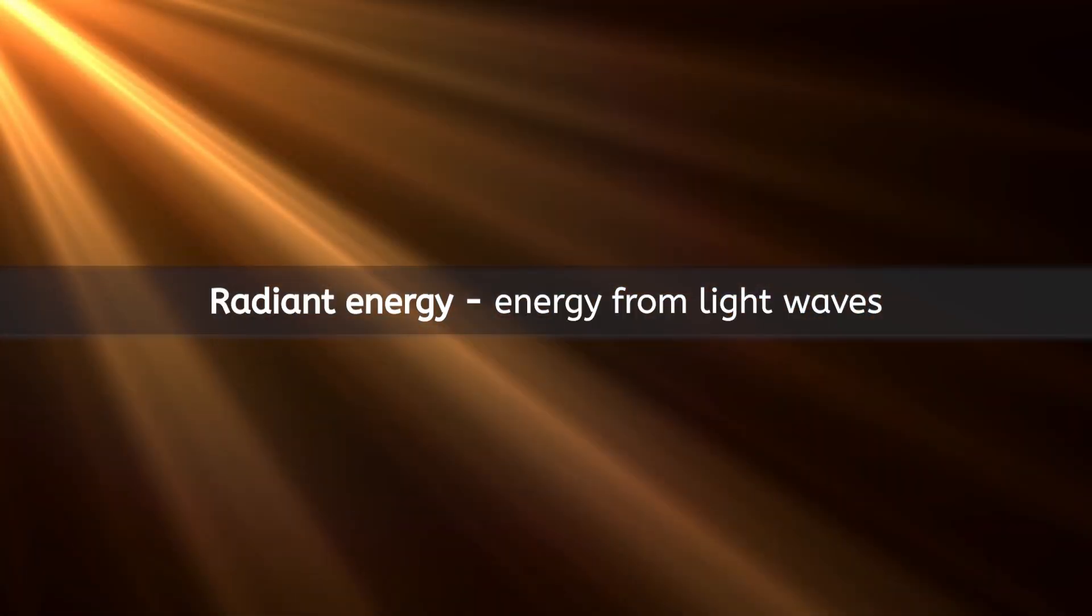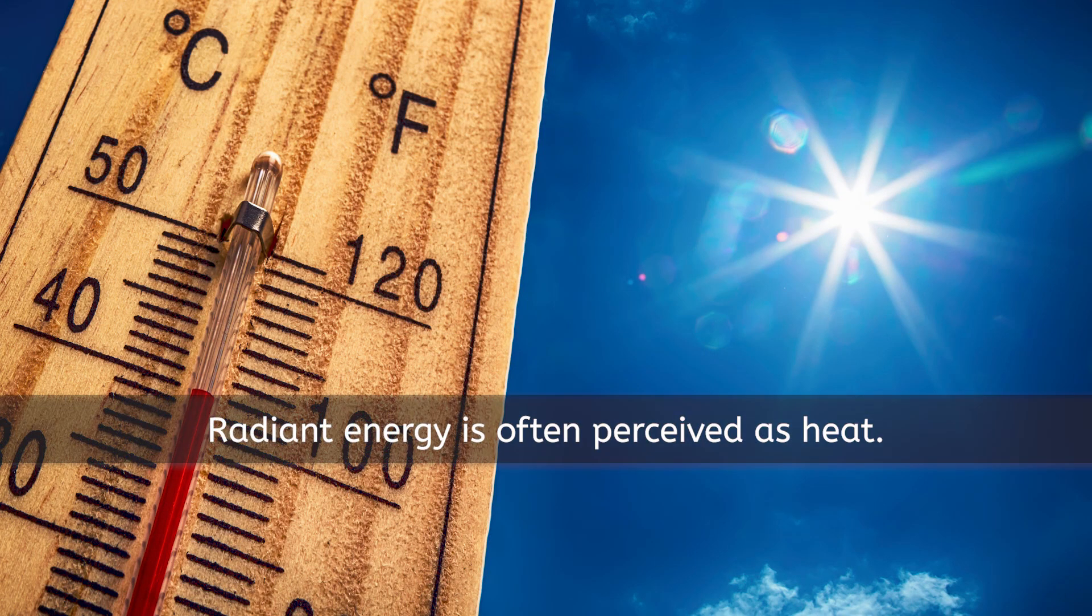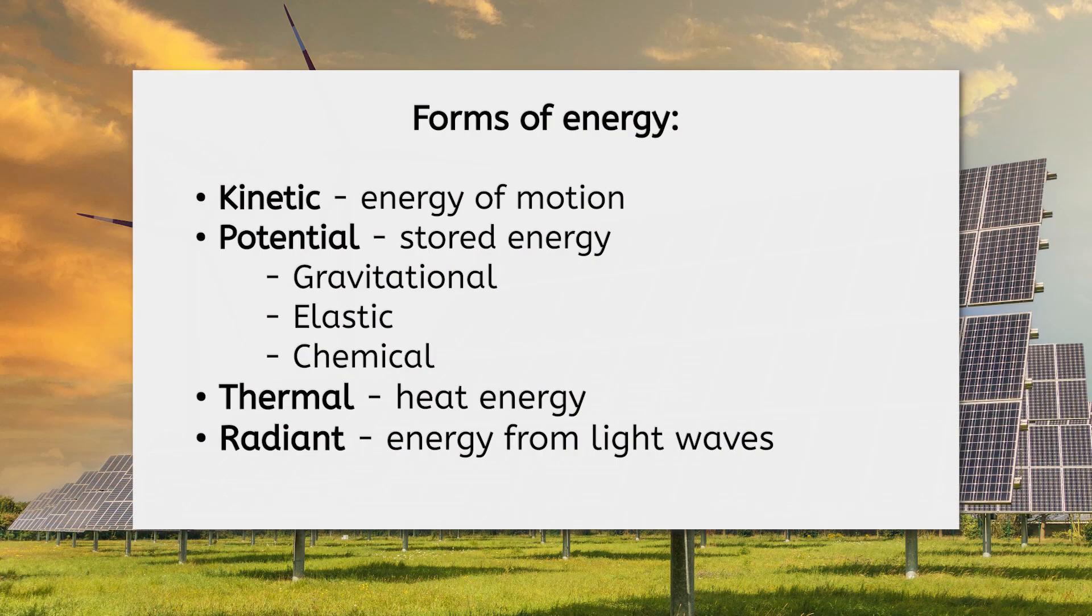Closely related to thermal energy is radiant energy, which travels as light waves. Where do most of the light waves on Earth come from? The Sun! This radiant energy is often perceived as heat, or thermal energy, because in addition to providing light, it can heat objects up on contact. If you haven't done so already, be sure to update the forms of energy list in your notes, with thermal and radiant energy.